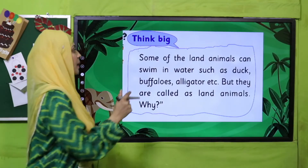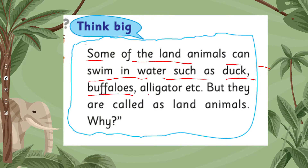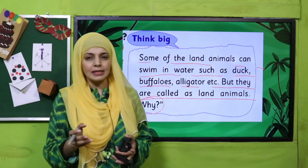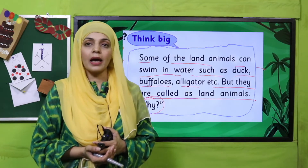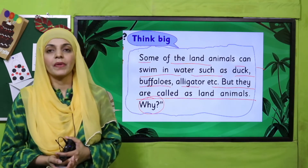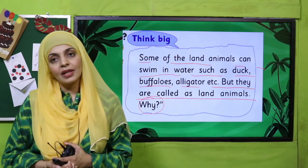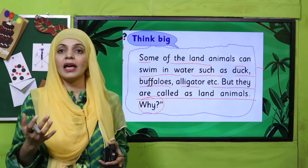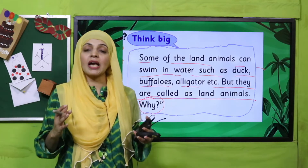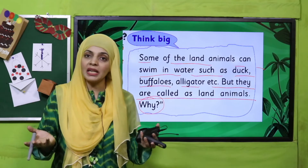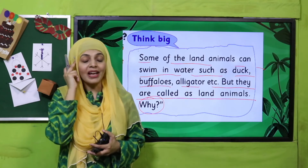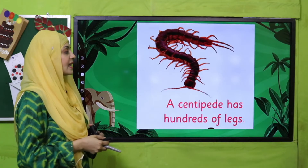Some of the land animals can swim in water, such as duck, buffaloes, and alligators, but they are still called land animals. Why? Because the alligator always makes its home on land. So wherever an animal makes its home, that is its identity. If an animal makes its home on land, it is a land animal. If it lives in water, then it is a water animal.